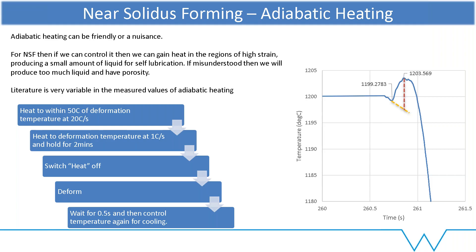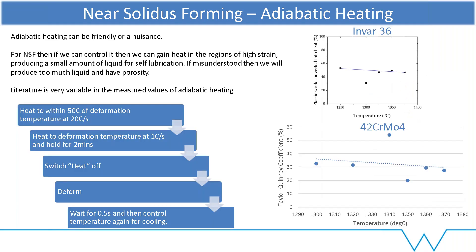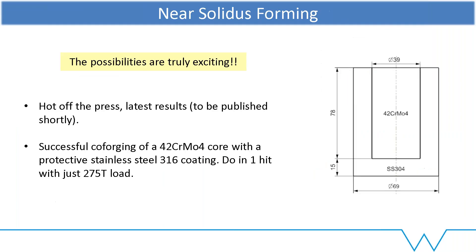A typical curve shows this clearly. For two different materials, the Invar is typically about 50% conversion, whereas we drop down to about 30% for the 42-chrome moly steels. Important to do that — 30% is still a significant amount of energy being turned into heat. So once we have all this, what are the possibilities? I don't think any of us — between us and Mondragon — are happy just making conventional parts near solidus. What's the next step? What can we do that other people can't?